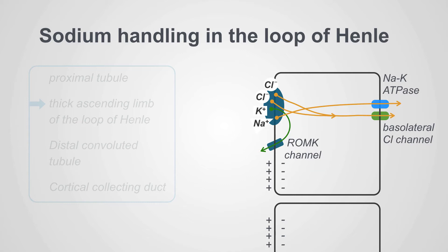When that happens, what is normally an electroneutral movement — two cations, sodium and potassium, and two anions, chloride — now becomes electrogenic. Because there's no net movement of potassium, you get a positive charge on the tubular side of the membrane. The kidney uses this byproduct to force the reabsorption of other cations — magnesium, calcium, and sodium specifically — through a paracellular pathway, meaning between the cells, driven by that positive charge generated from the recycling of potassium.